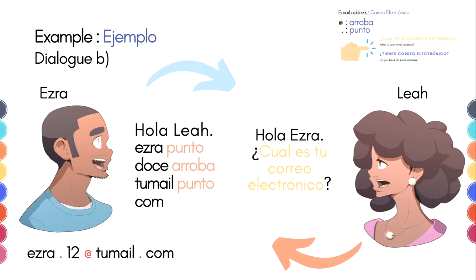Dialogue B. Ezra says: Hola, Leah. And Leah says: Hola, Ezra. ¿Cuál es tu correo electrónico? And Ezra replies: ezra punto doce arroba tumel punto com.